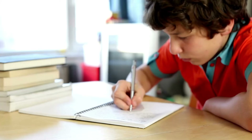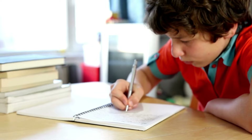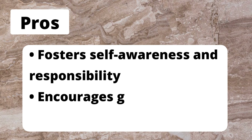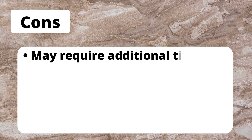The reflective approach encourages students to reflect on their learning process, set goals, and track their language learning progress. Learners keep journals and engage in self-assessment, fostering self-awareness and metacognition. Example: have students keep journals to track their language learning progress. Pros: fosters self-awareness and responsibility, encourages goal setting, enhances metacognition. Cons: may require additional time and effort, may not suit all students, requires teacher guidance.